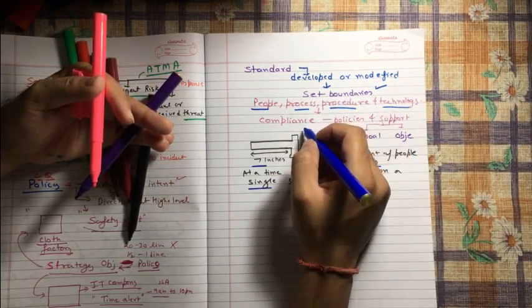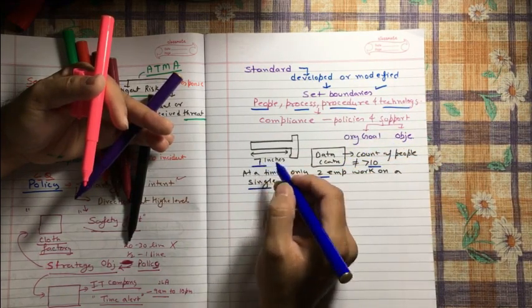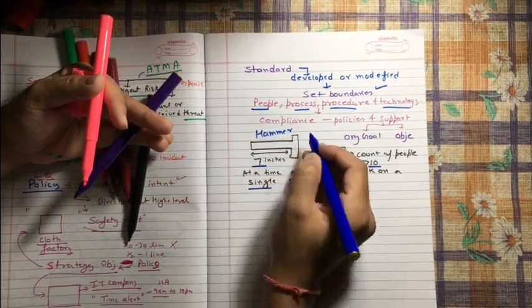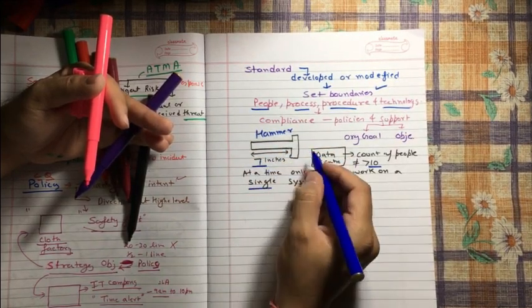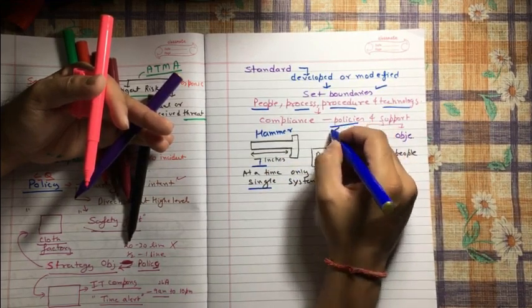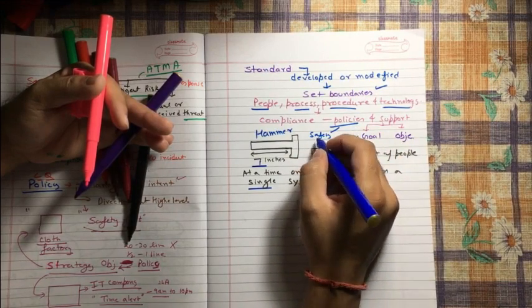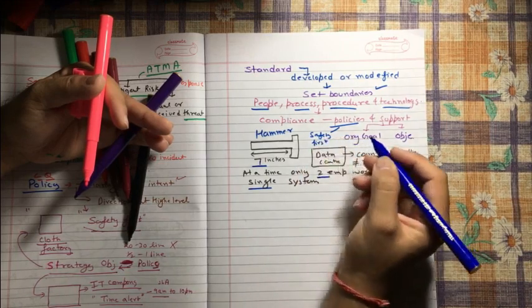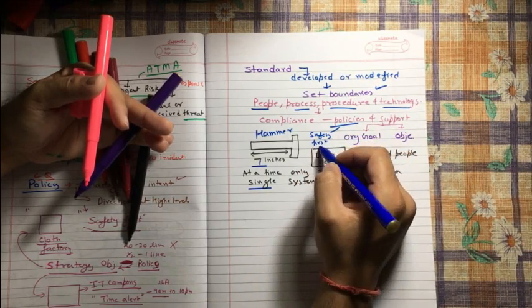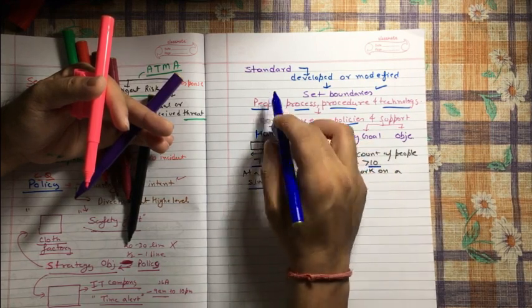So these things come under our standards. And this will help us to get the compliance as per the policy. Because you know what? If we have this hammer more than seven inches, let's say 10 inches or 11 inches or five inches, then our policy which states that safety first is not going to be complied. To comply with our policy, we must have a hammer of seven inches. And that's why we have a standard.